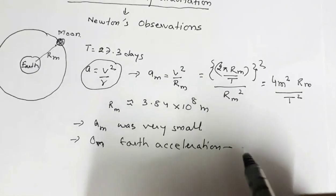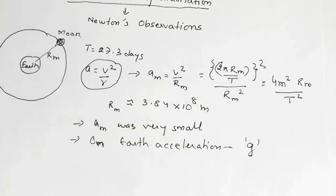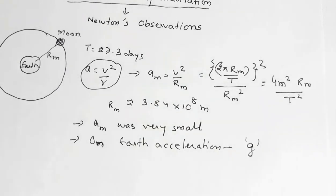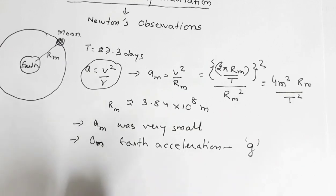The acceleration due to gravity on Earth was already known. The value of am was very small compared to g. Newton reasoned that acceleration is caused by force, and this force is due to the gravitational attraction of the Earth. But the moon is far away — any object on the surface of the Earth is much closer, so its acceleration due to gravity is far greater than the moon's acceleration.